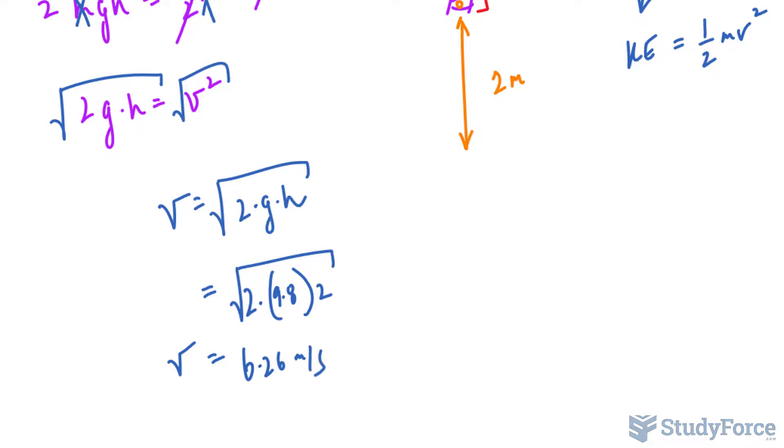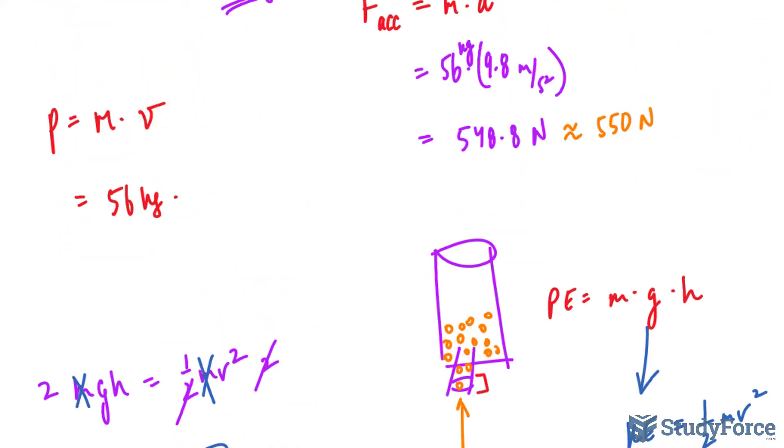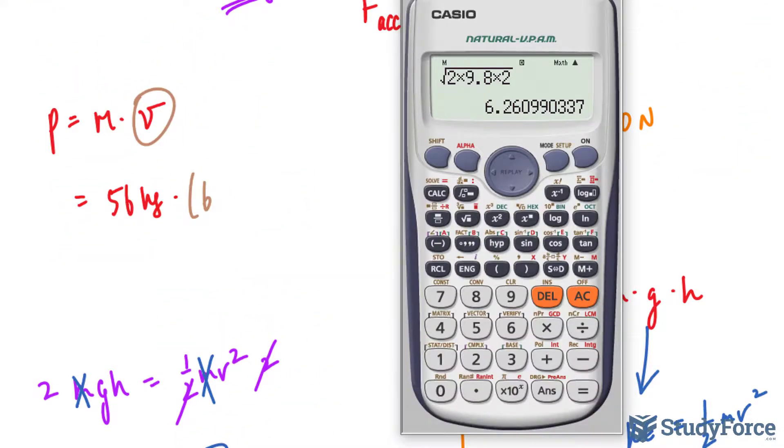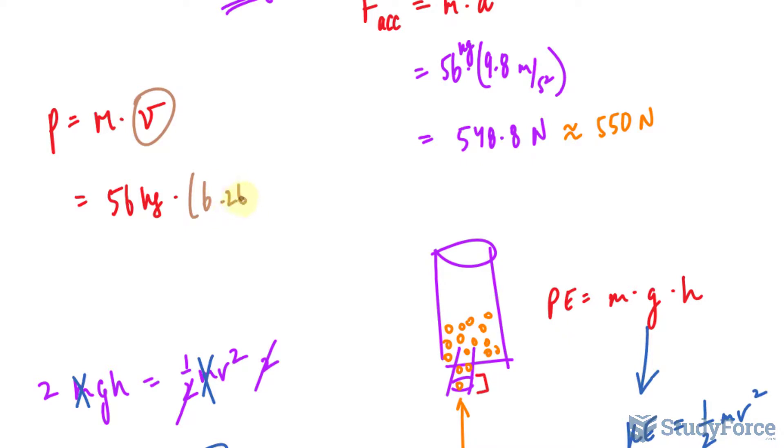And that gives us a velocity of 6.26 meters per second. So now we have the velocity and we can use that into this formula, where we have 6.26 meters per second, and this gives us the momentum.